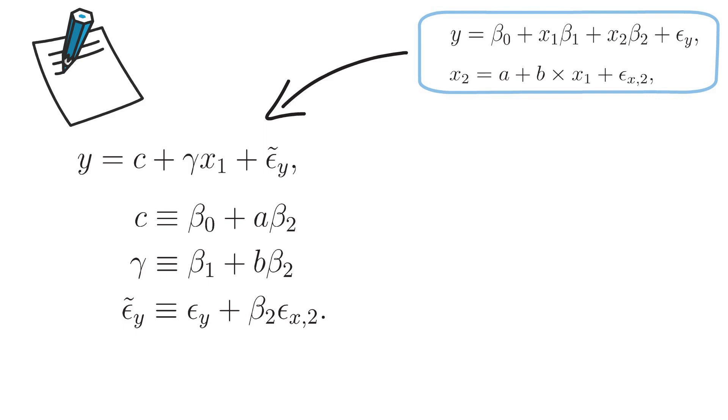And let's make sure the last equation coincides with the previous two. So c has to equal beta 0 plus a beta 2. Gamma has to equal beta 1 plus b times beta 2.